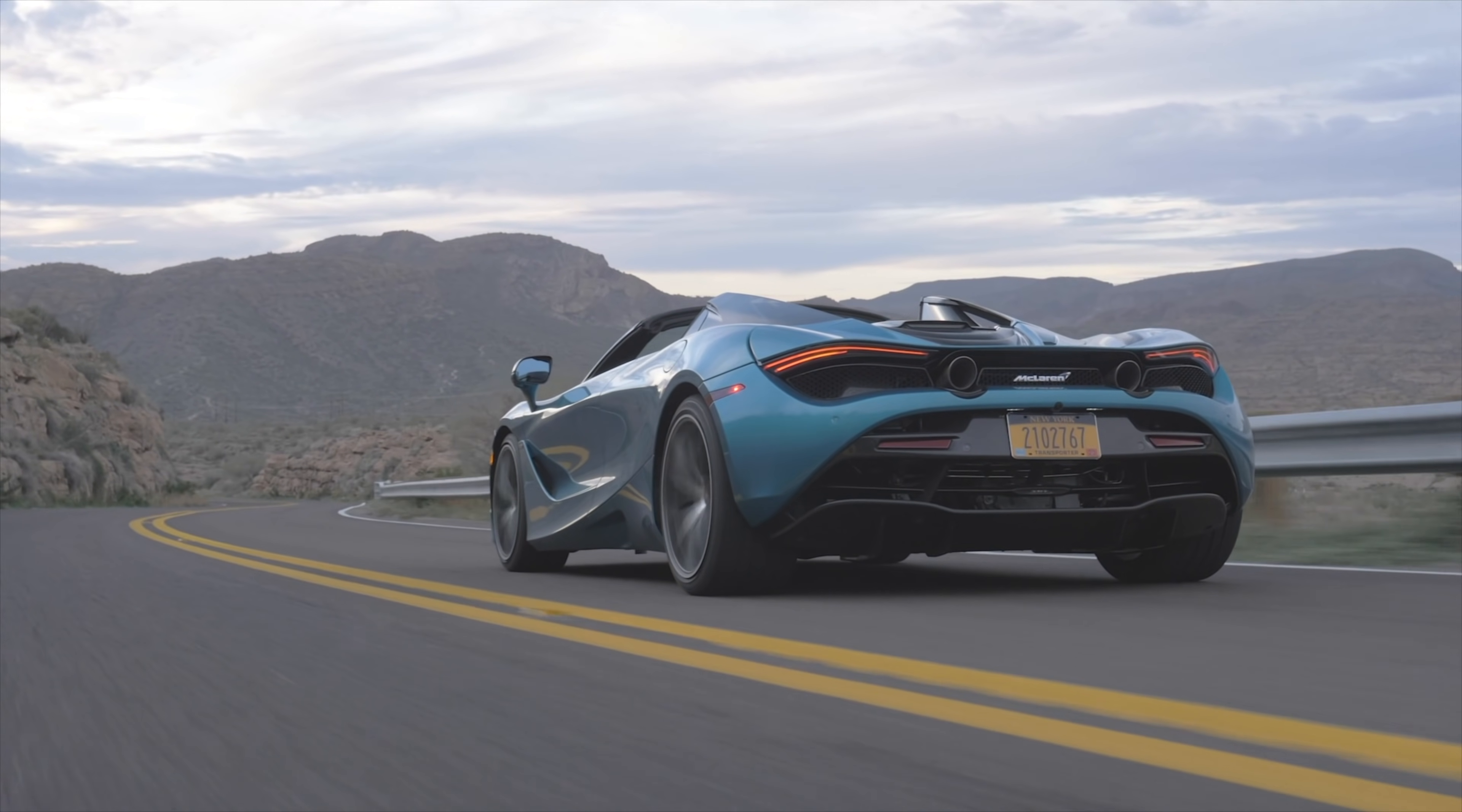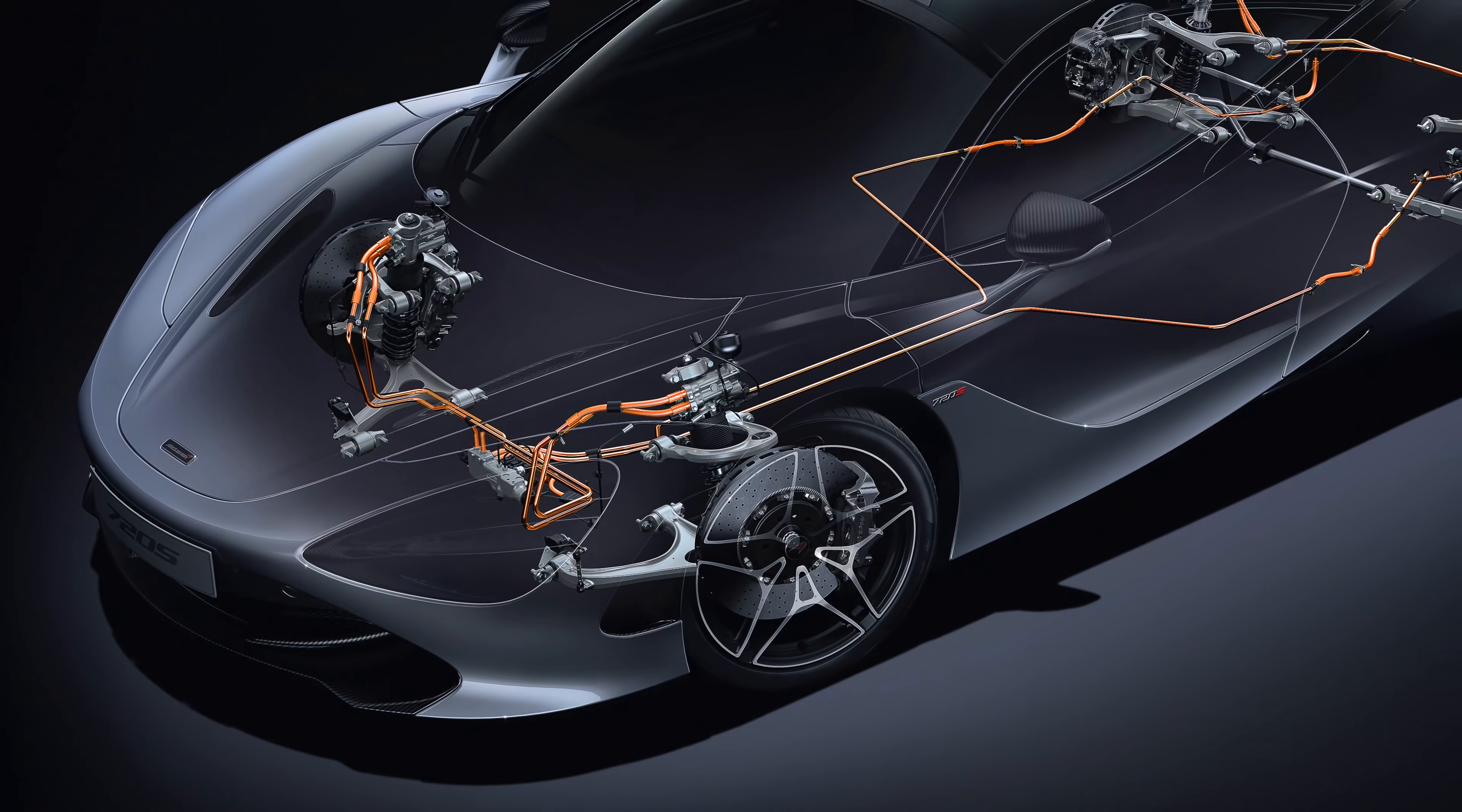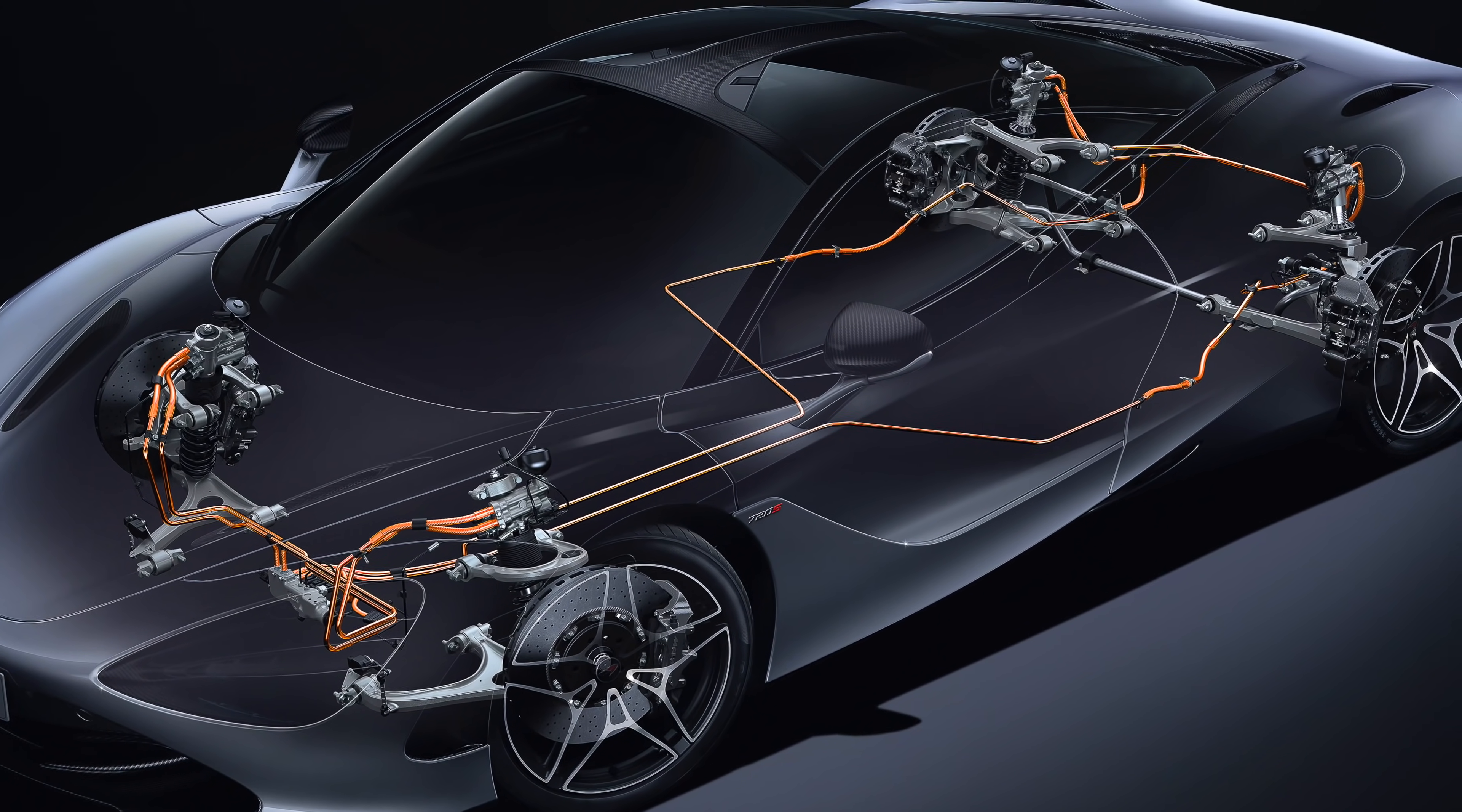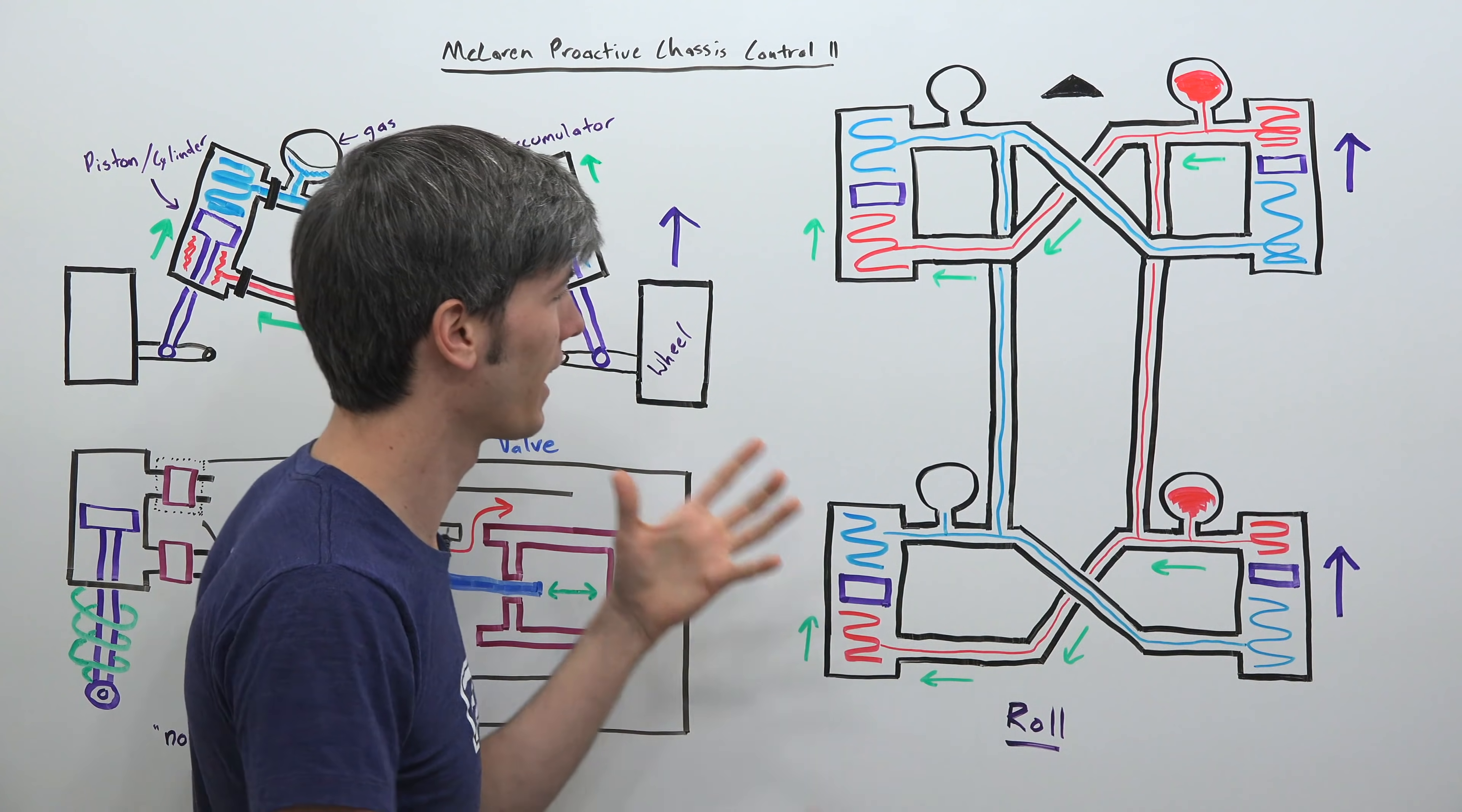Another fun fact: Teneco, the original supplier for McLaren's Proactive Chassis Control, also supplied a similar suspension to Citroen for their WRC car and it was actually banned by the FIA for being such an effective suspension.